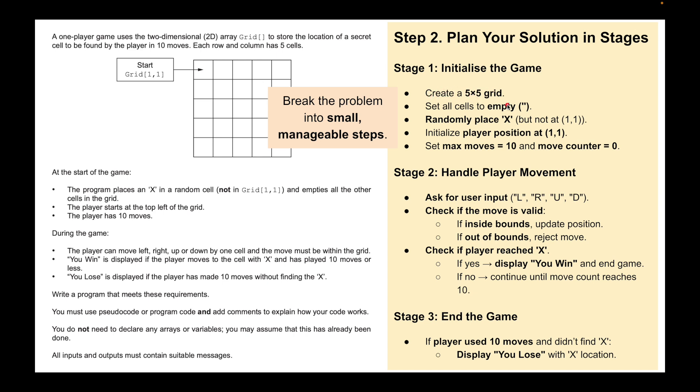To initialize the game, the program will load, it will create a 5x5 grid, set all the cells to empty, randomly place an X in any position apart from 1-1, put Player 1 into position 1-1, set our maximum moves to 10, and set a move counter to 0 so it knows it's going to be counting upwards every time it moves. It's going to ask for user inputs: left, right, up, or down, and check if these moves are valid. If inside the boundaries, it will update the position. If outside the boundaries, it will reject the move.